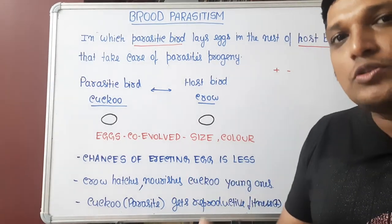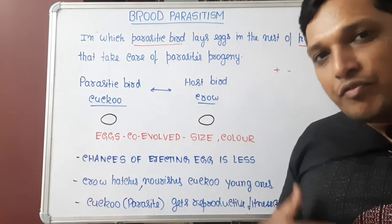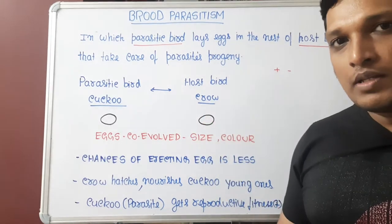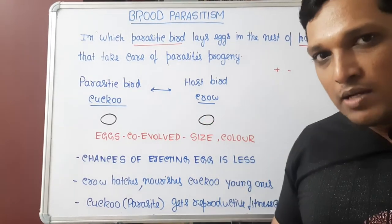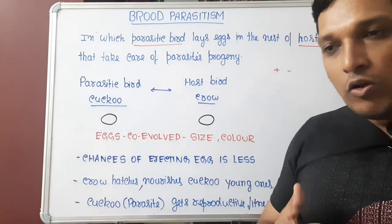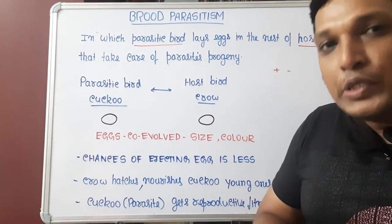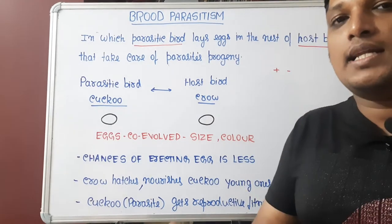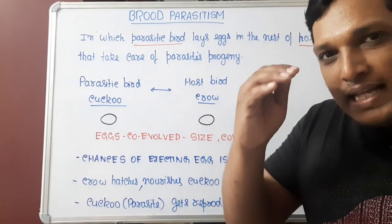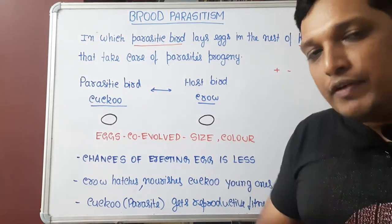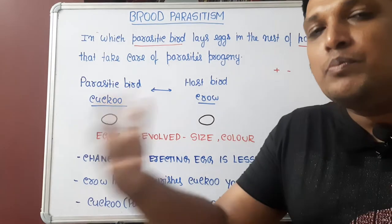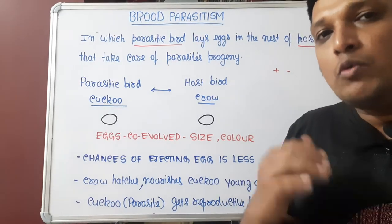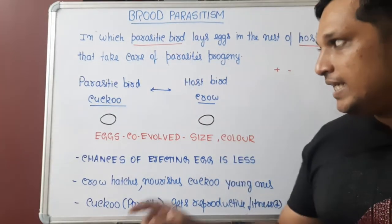Why does this occur? Why does one bird have to depend upon another? It is mainly because it is a sort of reproductive strategy. In the avian group, any bird nourishing its young ones must produce crop milk, which derives lots of nutrients and energy from the body. So the reproductive fitness of a bird decreases while nourishing young ones. To prevent that decrease in reproductive fitness, birds practice brood parasitism, whereby one bird lays its egg in the nest of another bird so that it is prevented from becoming weak.